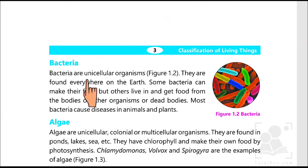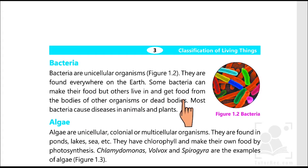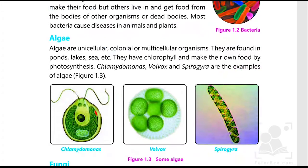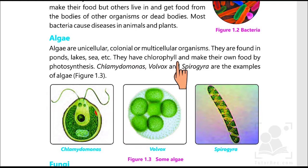Bacteria are unicellular organisms. They are found everywhere. Some can make their own food, but others live in and get food from the bodies of other organisms or dead bodies. Algae are unicellular, colonial, or multicellular organisms. They are found in ponds, lakes, seas, etc. They have chlorophyll and make their own food by photosynthesis.